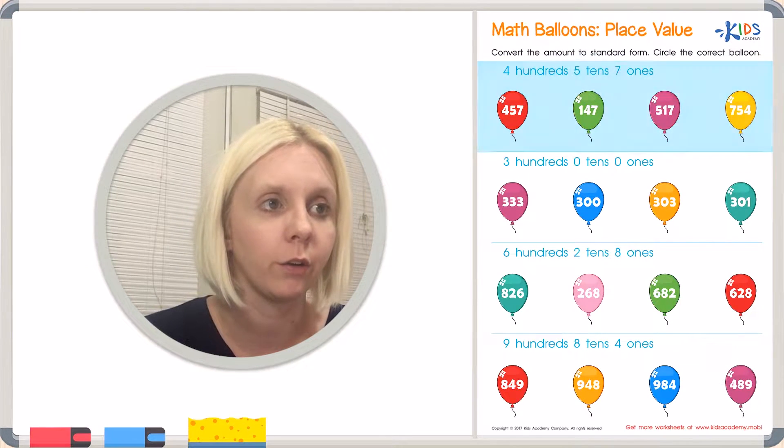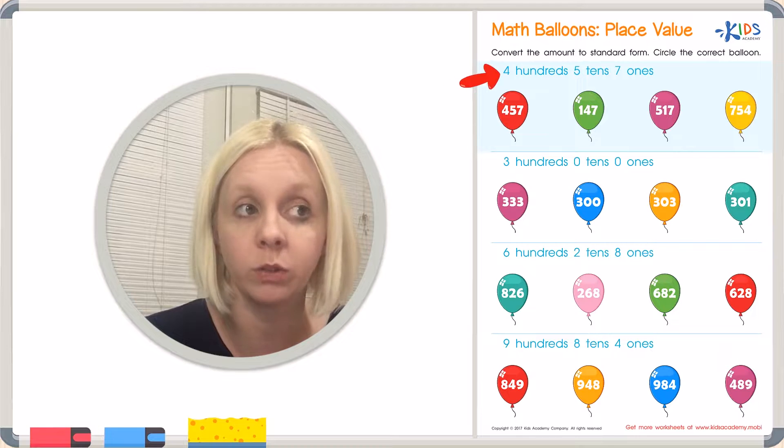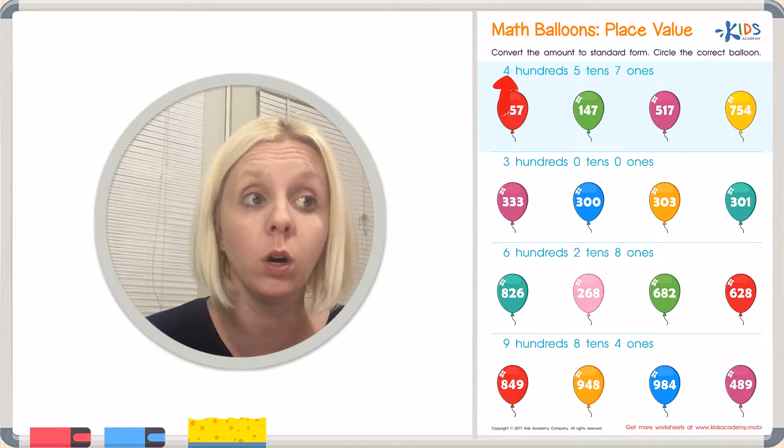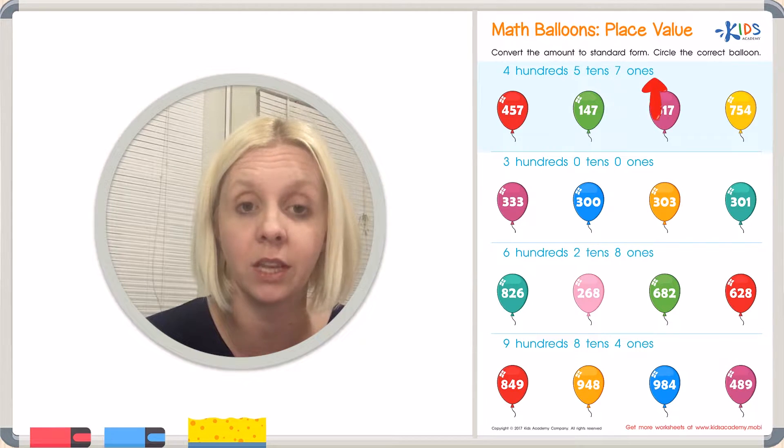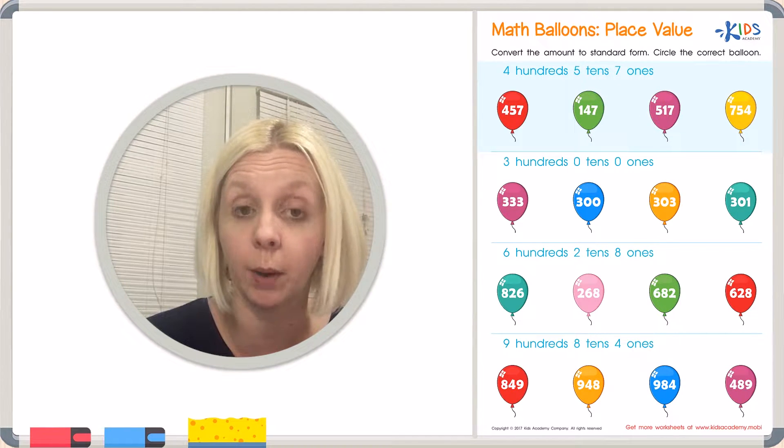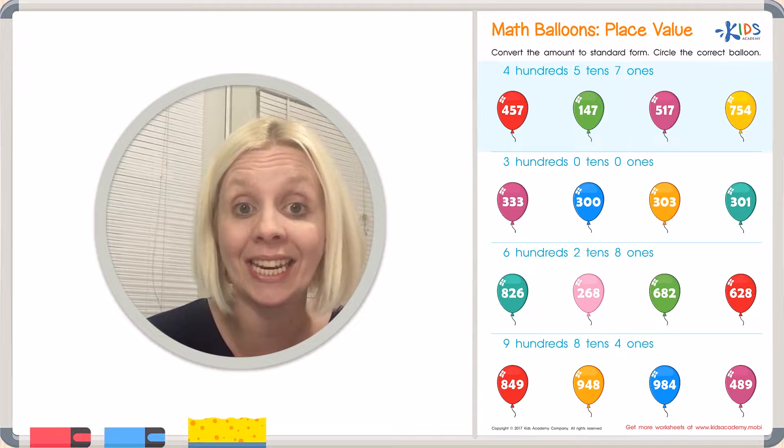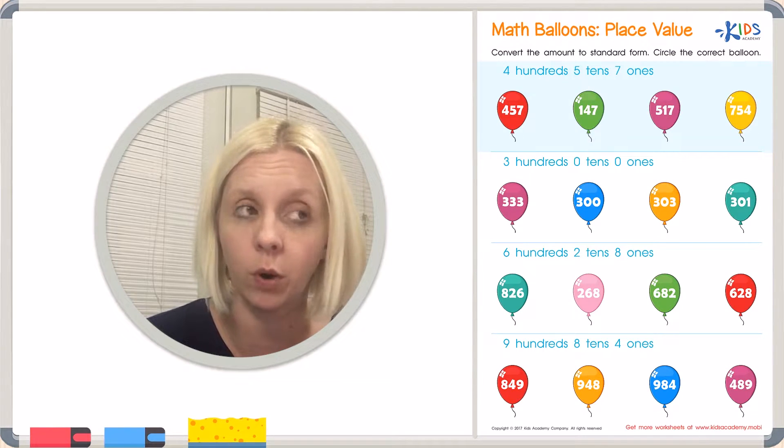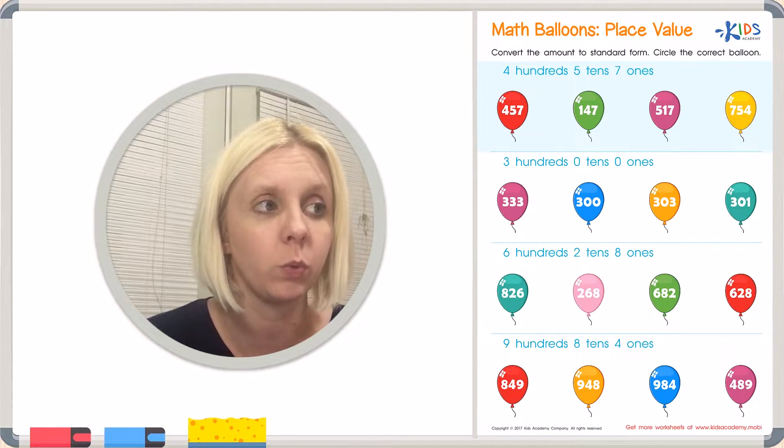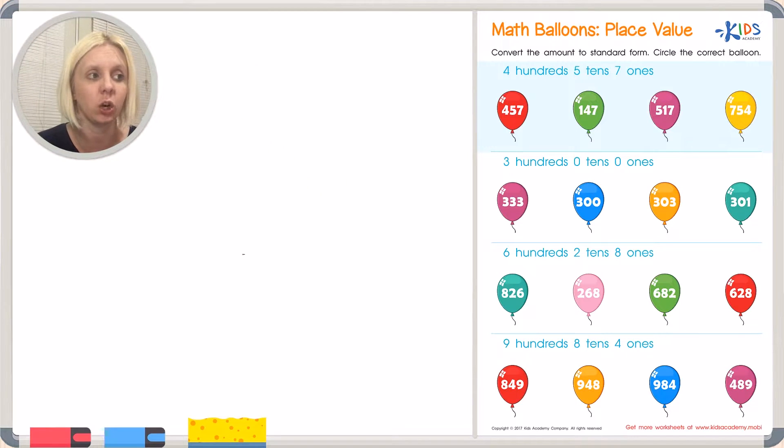We've got our first problem and it's written out in written form. It says four hundreds, five tens, and seven ones. And what I like to do when we're talking about place value is to put everything in a T chart to kind of figure out where everything is supposed to go.